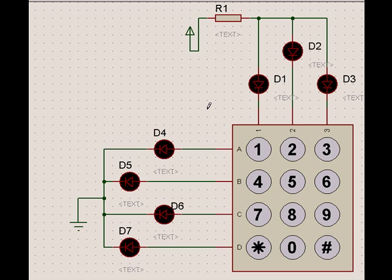Now when we operate this, supposing when I press 1, I find that D1 and D4 - the path is complete this way. The path is complete this way, so D1 and D4 are switched on.